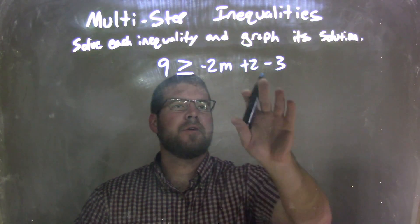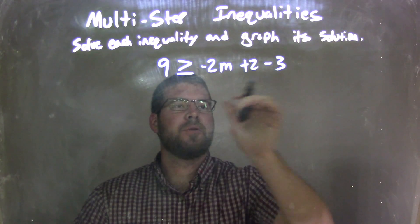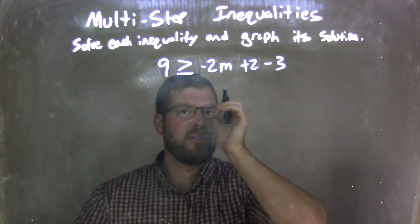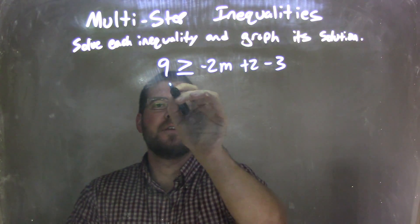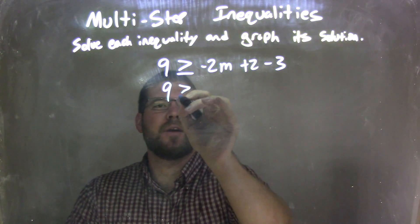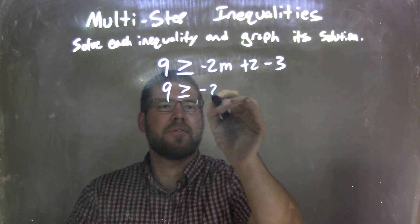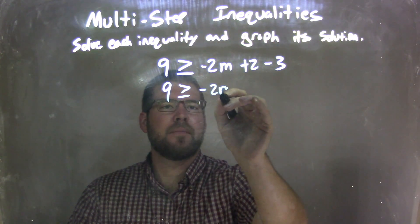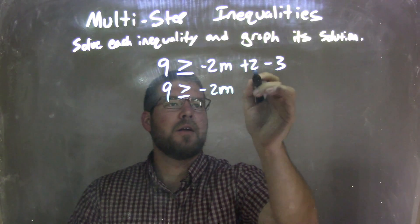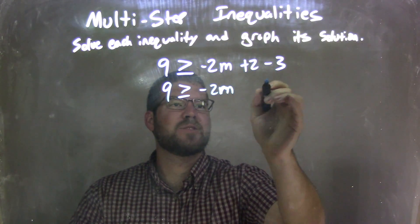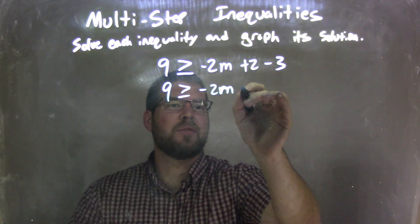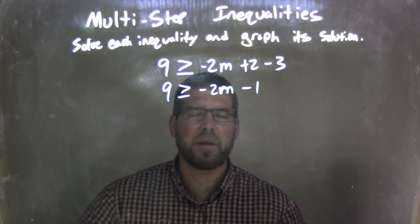The first thing I'm going to do is combine the 2 and the minus 3. So I leave the 9 over here as greater than or equal to negative 2m, and 2 minus 3 is negative 1, so we have minus 1 here.